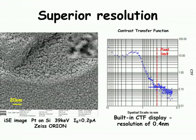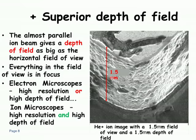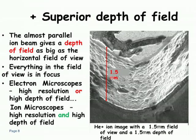A couple of other important things: because the beam is almost parallel, the depth of field is extremely high — the vertical range over which everything is in focus. In an electron microscope you must choose between high resolution or large depth of field, but not both. In an ion microscope you can have high resolution and a high depth of field simultaneously. The image shown here is essentially a cube about one and a half micrometers across, and everything within that cubic area is pretty much equally sharply in focus, adding a huge amount of information to every collected image.